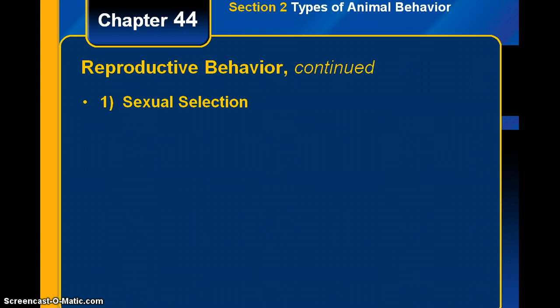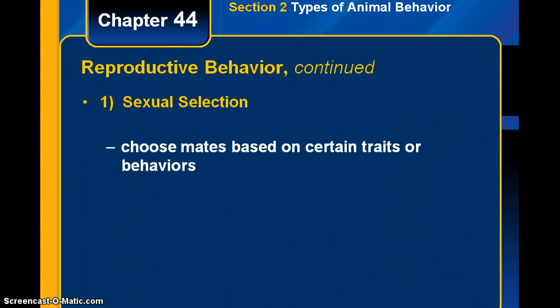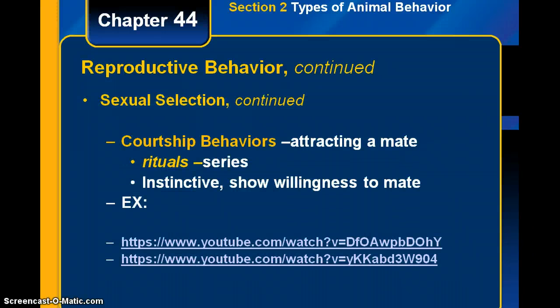The first type of reproductive behavior is called sexual selection. Like natural selection, it involves choosing mates based on certain traits or behaviors. We select the ones we think are better based on favorable traits — those we think are good to pass on. This involves different courtship behaviors.